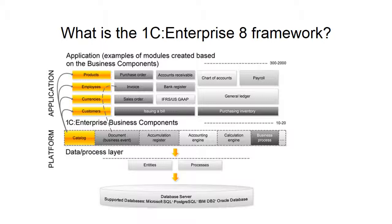Documents cover a range of business operations such as purchase orders, sales orders and invoices. The accumulation register handles accumulating document posting transactions such as accounts receivable or bank registers. The accounting engine is typically used for creating specialized ledgers in addition to the general ledger.